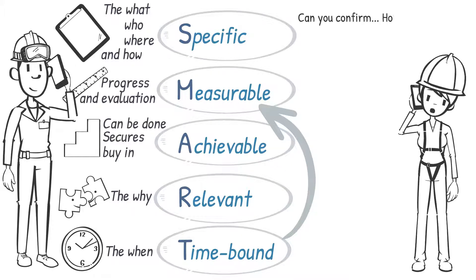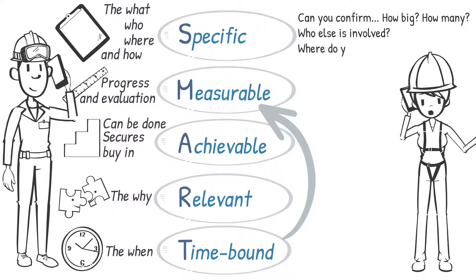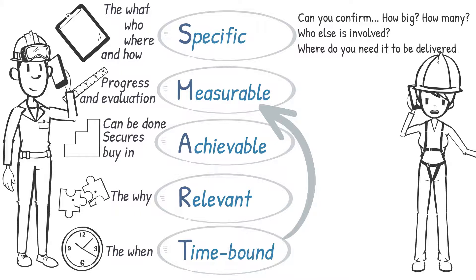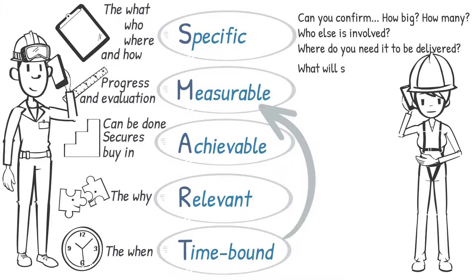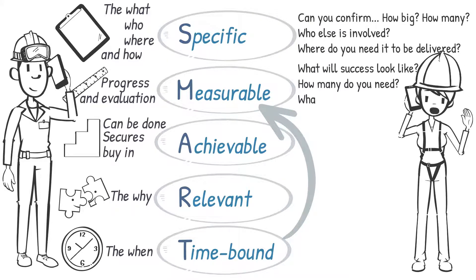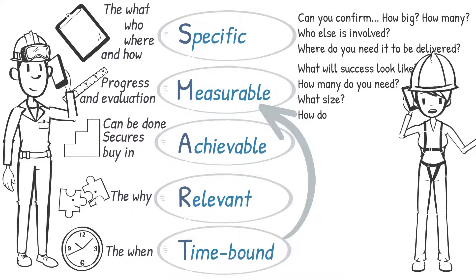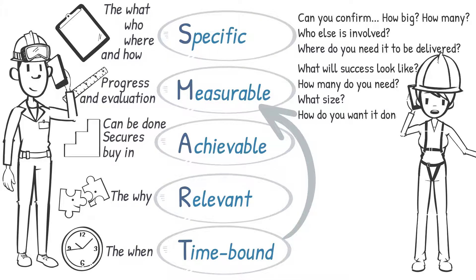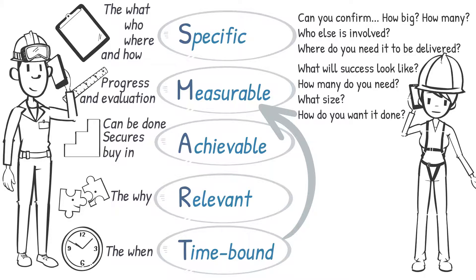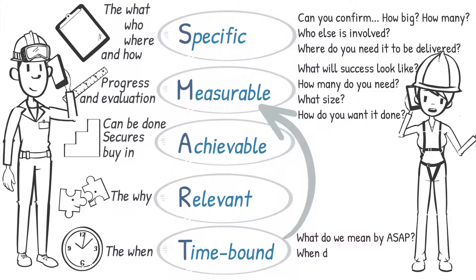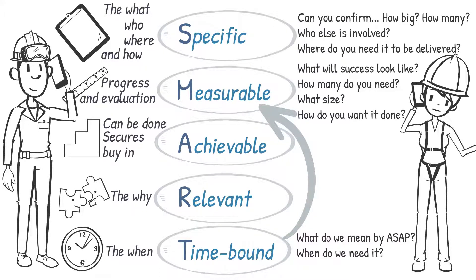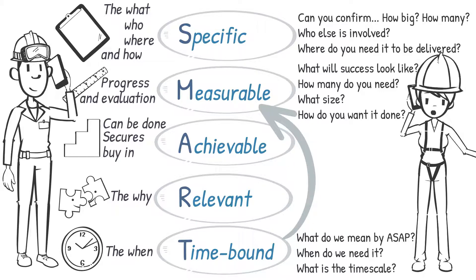What exactly are we trying to achieve? Who else is involved? Where should we deliver the output? How will we know that we've done a good job? Is there an expectation of how we will do this? What measures of performance will be used to evaluate the work? When does the work need to be completed by? What's the timescale? When are the key dates?